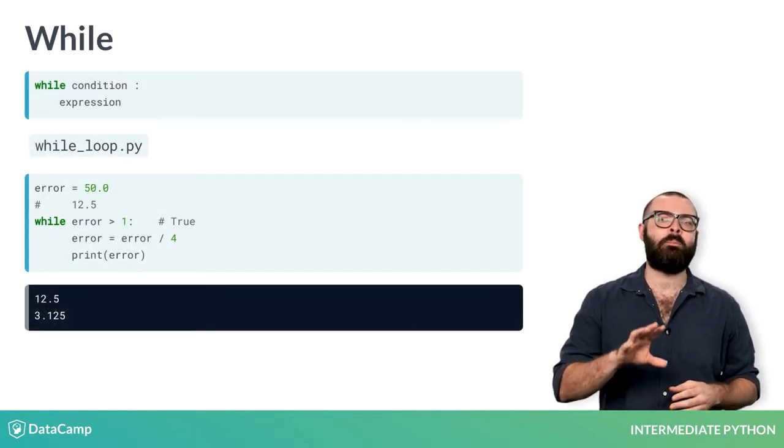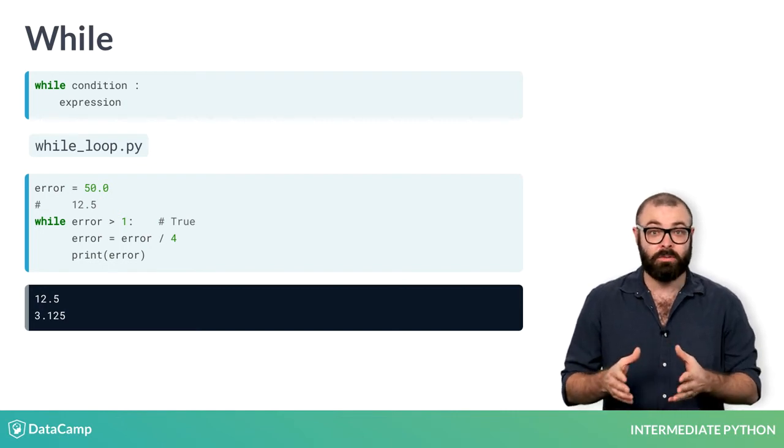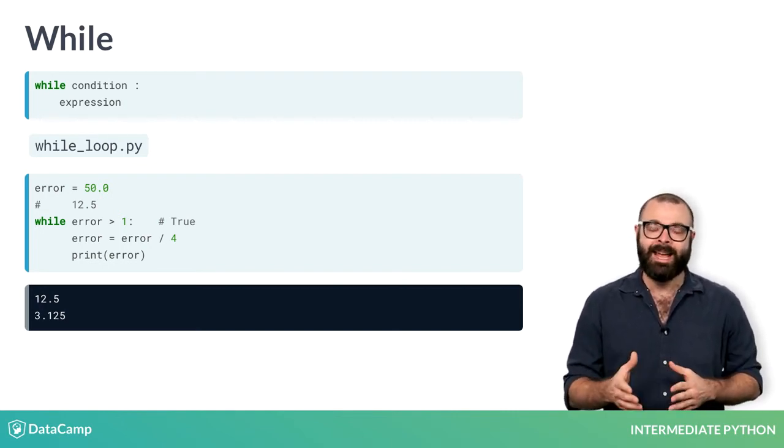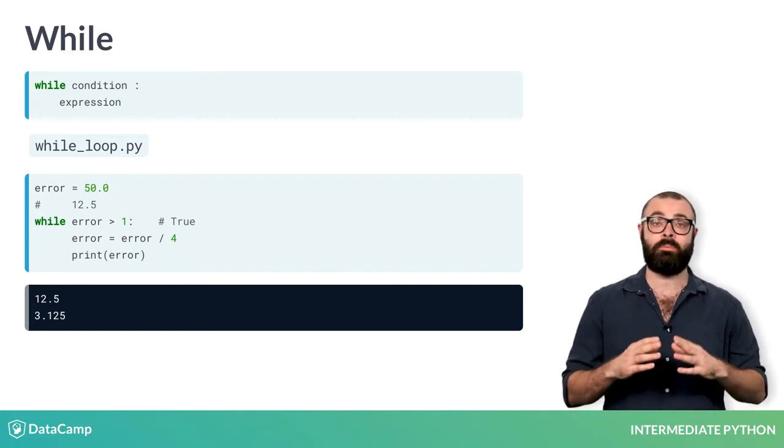Now, Python heads back to the condition of the while loop with error equal to 12.5. Again, the condition is true and the code is executed. The error is divided by 4 and printed out.